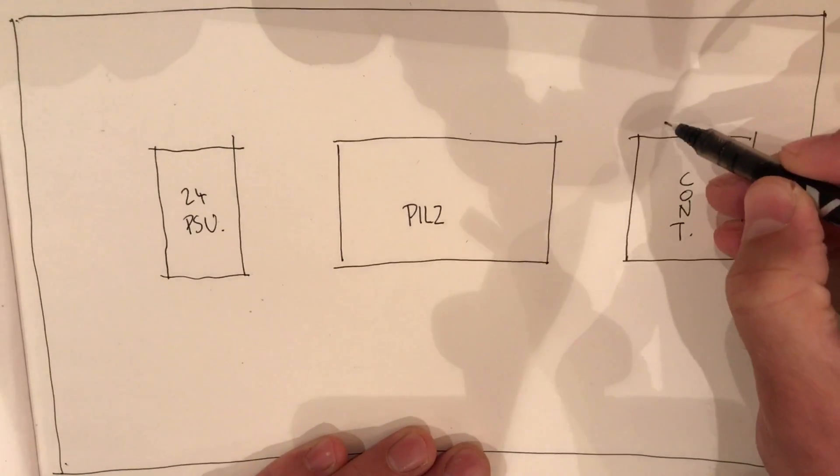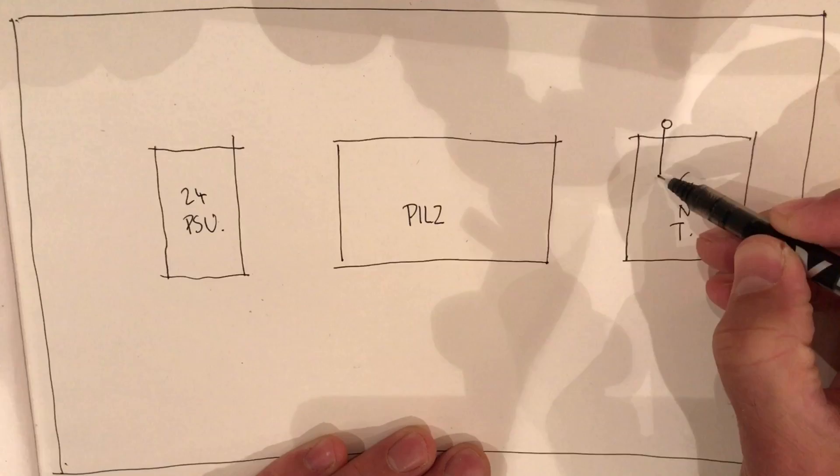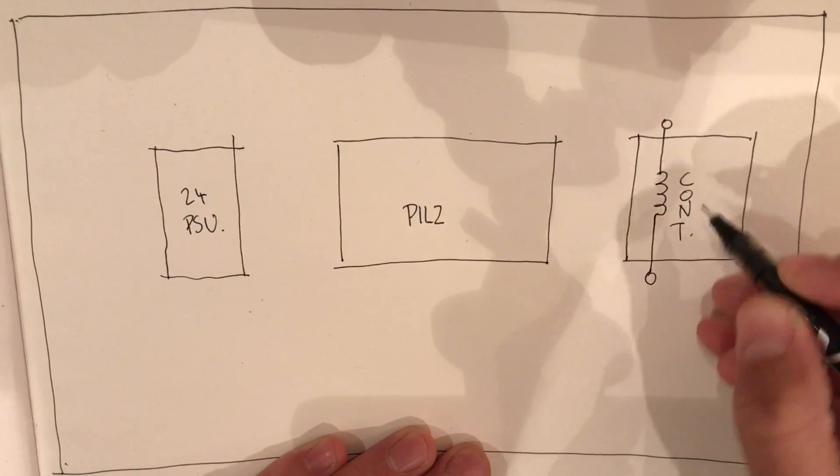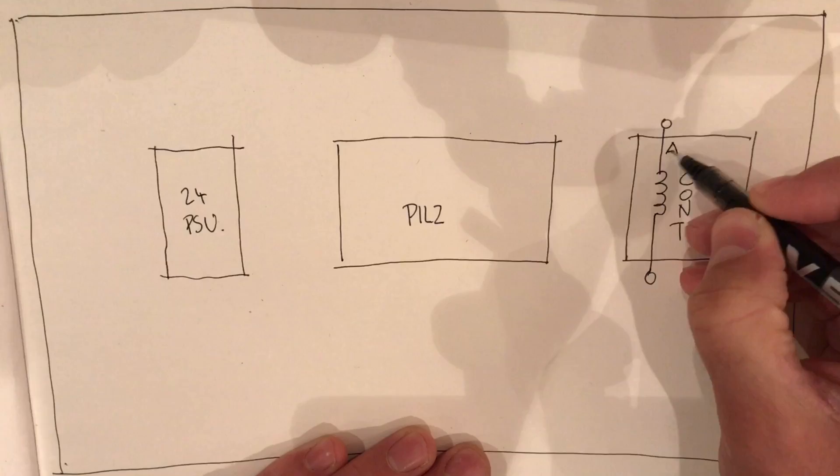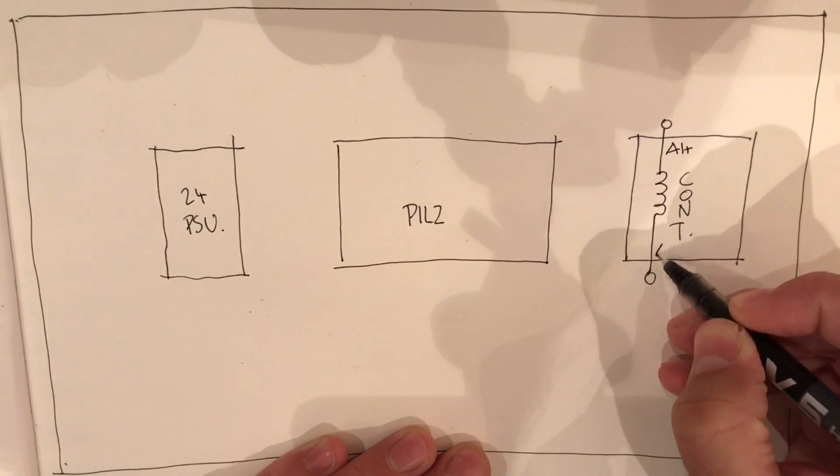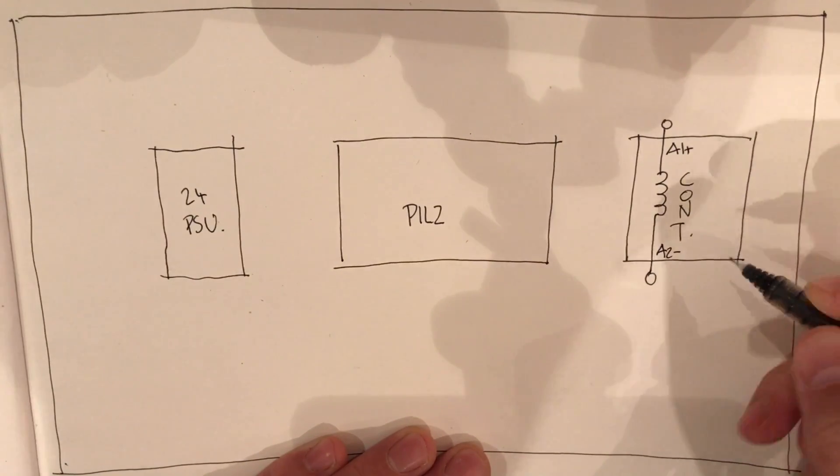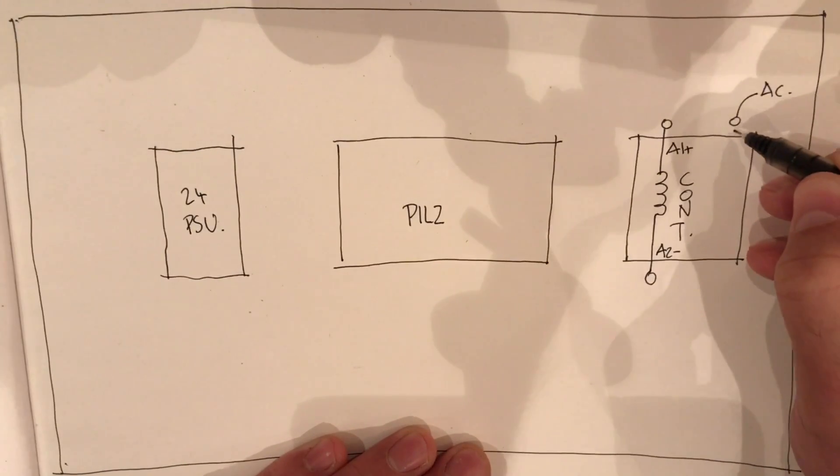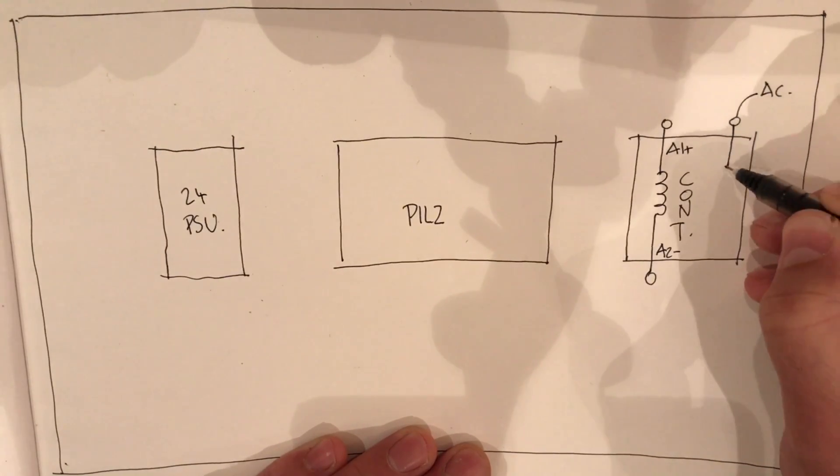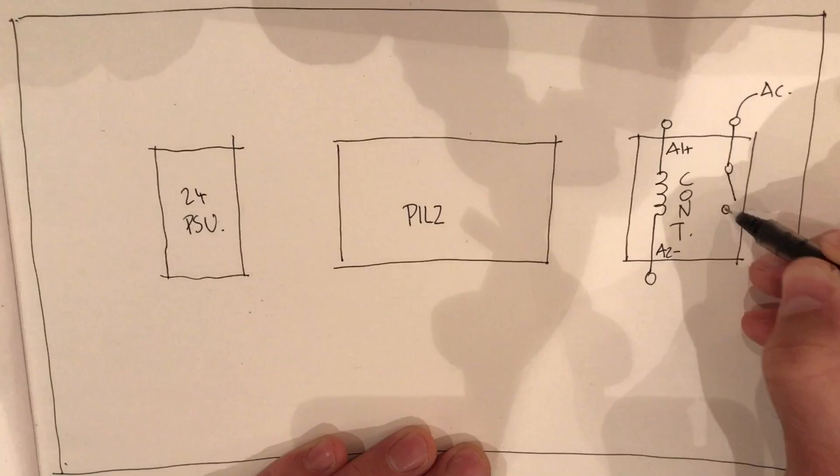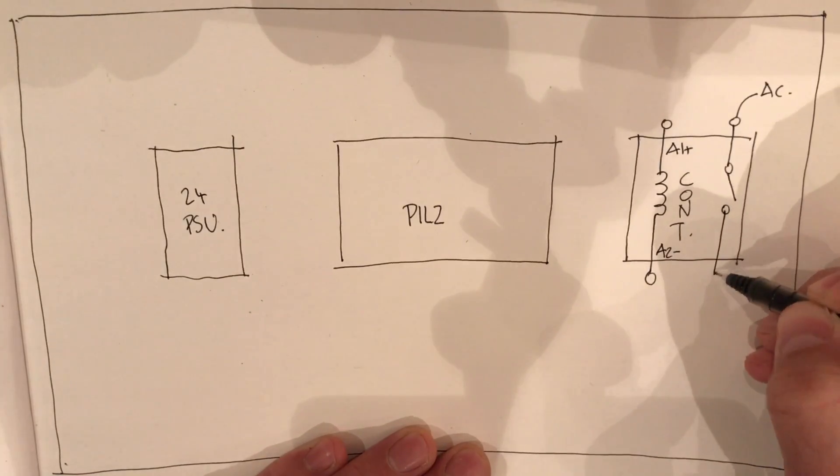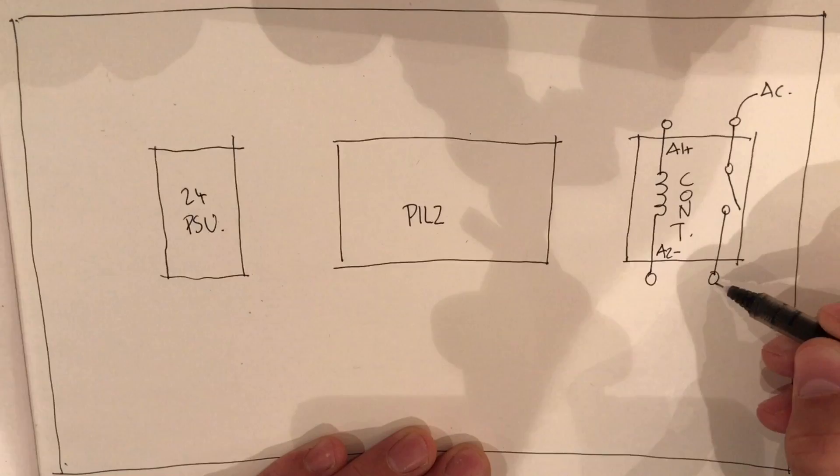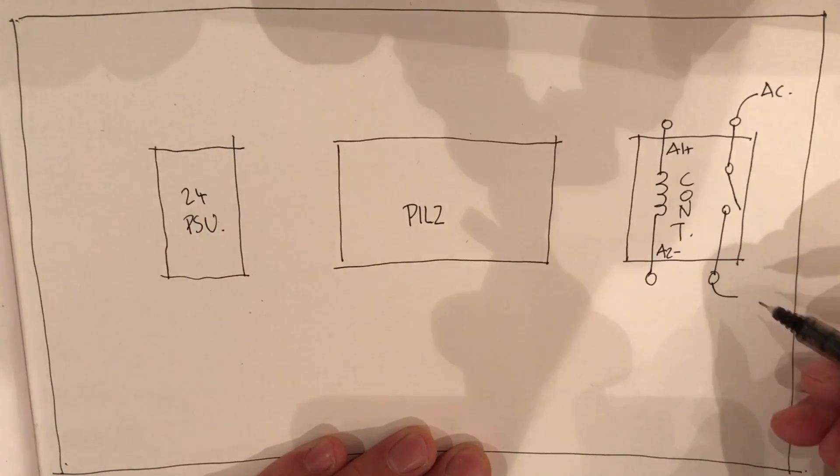The contactor has its main coil - A1 positive and A2 negative - and then you've got AC with its switch. When the coil's energized, the switch closes and the AC current flows.